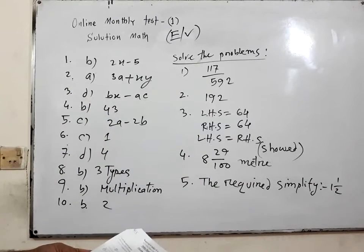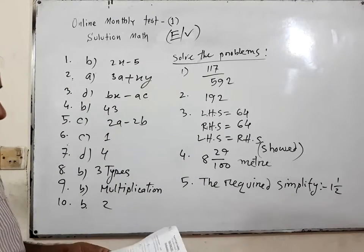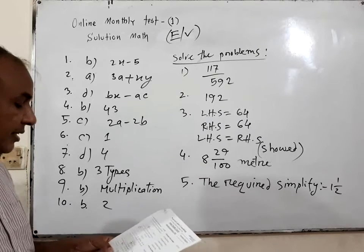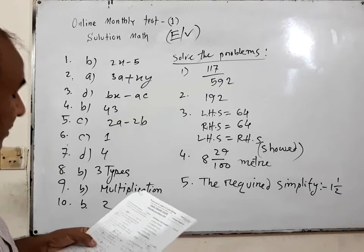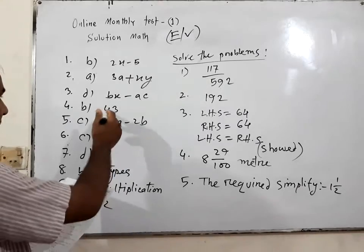Number 4. M is equal to minus 6 in expression M square plus 7. Then what is the value of the expression? 43.